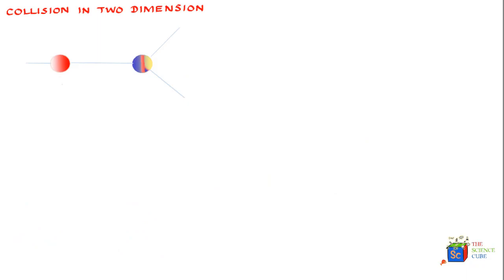So far what we've done is understood collision in one dimension, that is the two interacting masses are moving in a straight line. Now what would happen if the motion is in two dimensions? The good part is that the law of conservation of linear momentum is true for two-dimensional motion as well.